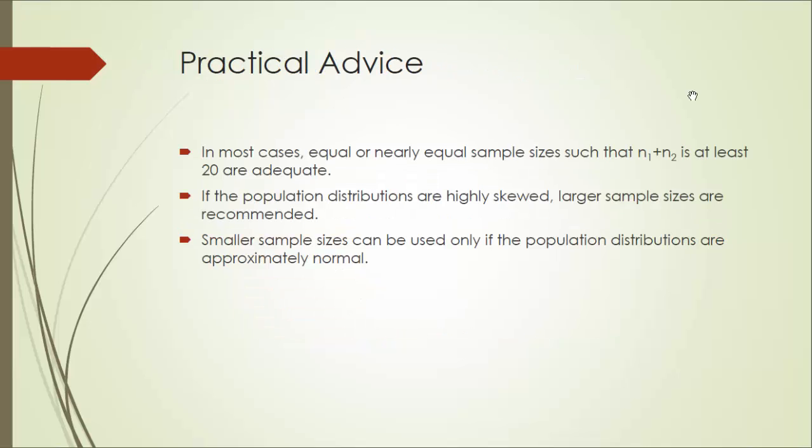Here's some practical advice. In most cases, equal or nearly equal sample sizes such that N1 plus N2 is at least 20 are adequate, because we are going to use t distribution, which takes into account the size of S1 and S2. If the population distributions are highly skewed, larger sample sizes are recommended. Smaller sample sizes can be used only if the population distributions are approximately normal.